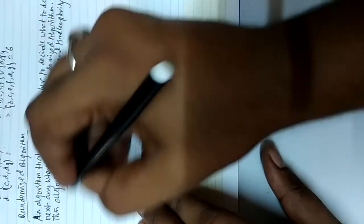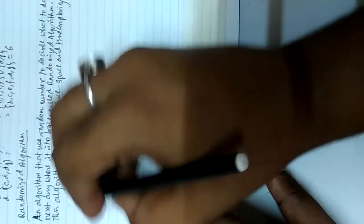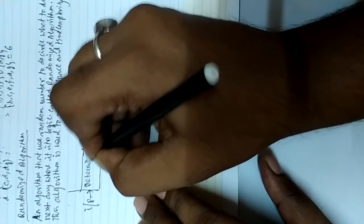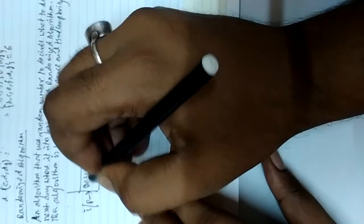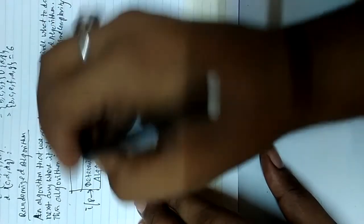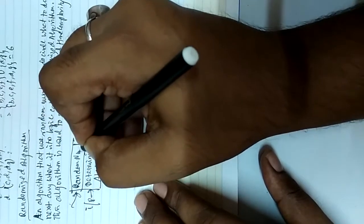Let us do one diagram. Normally, input is given to a deterministic algorithm and we get the output — this is what we normally do. But in case of a randomized algorithm, another thing is given: that is the random number. So the random number and the input both are given to the deterministic algorithm and we get the output.